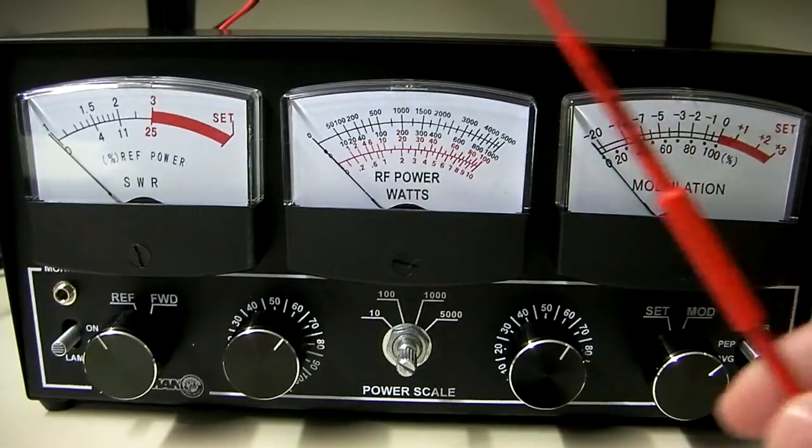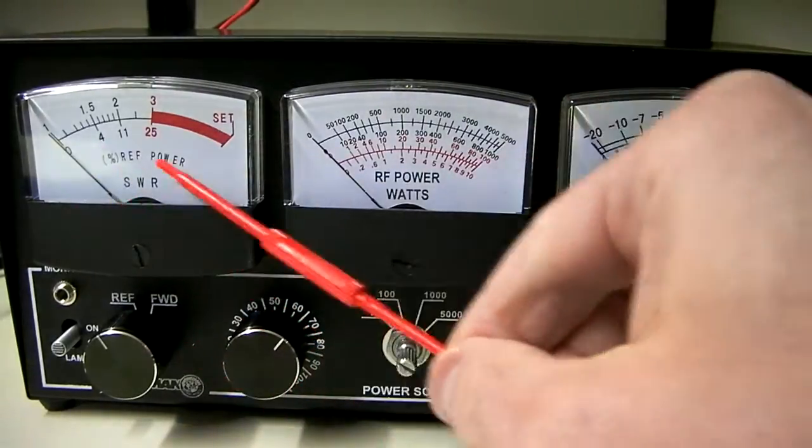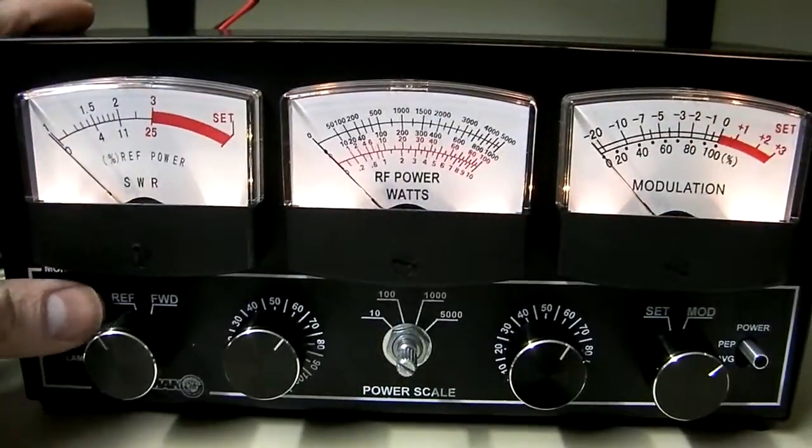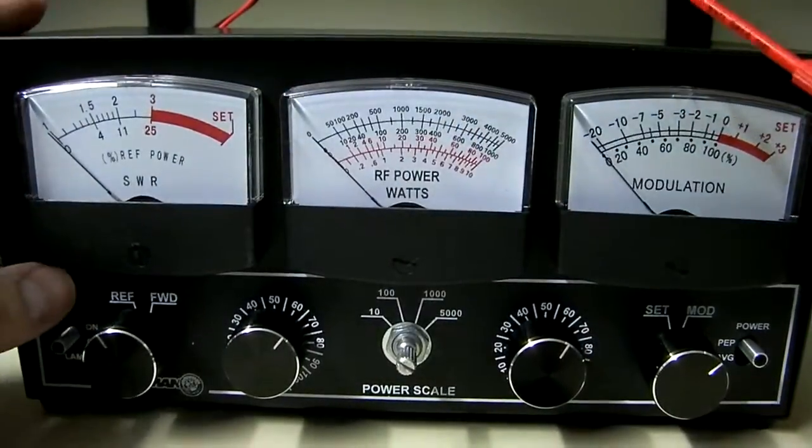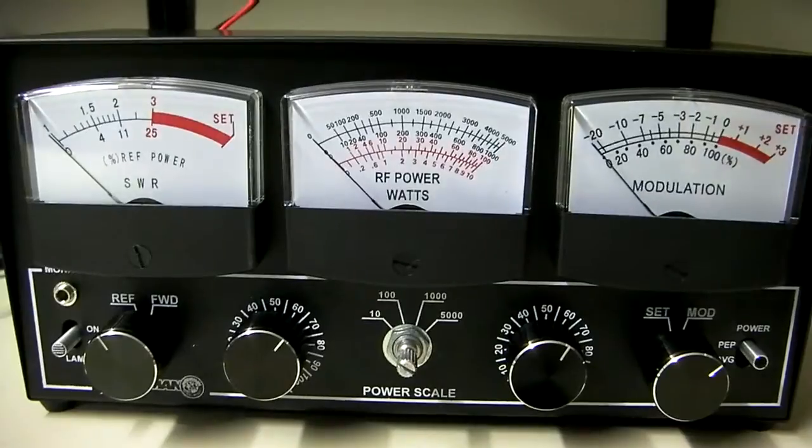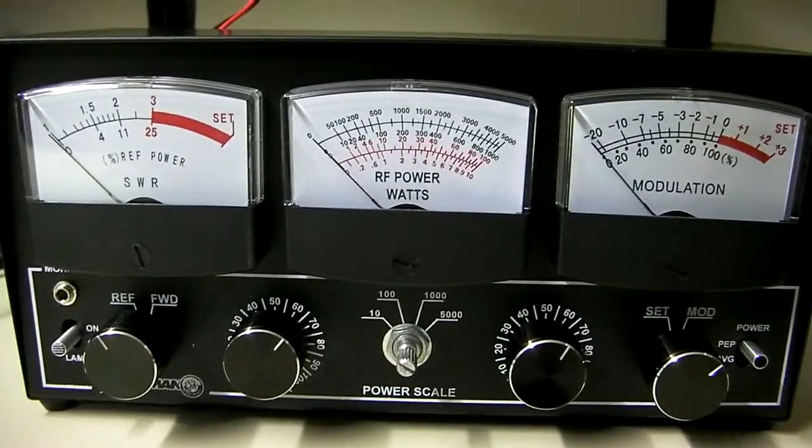The meter has a forward and reflect option here for setting this. It's got lamps on it. Turn the lamps on. It's got a headphone monitor. You can listen to yourself talking, adjust your echo or whatever you want to hear.